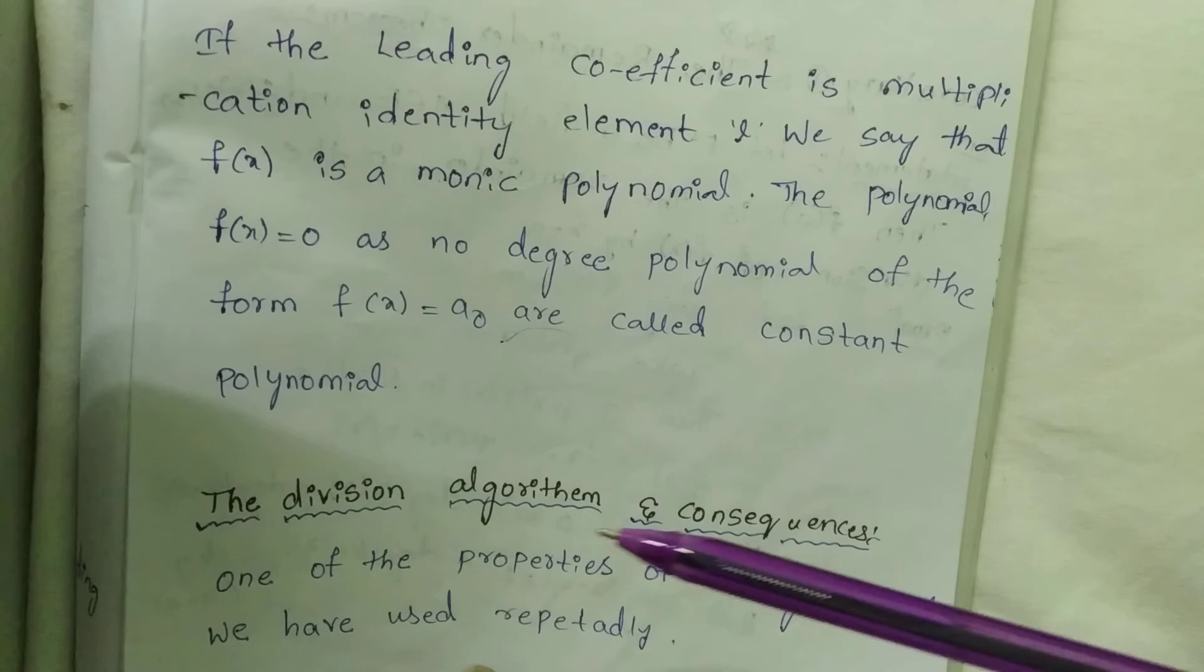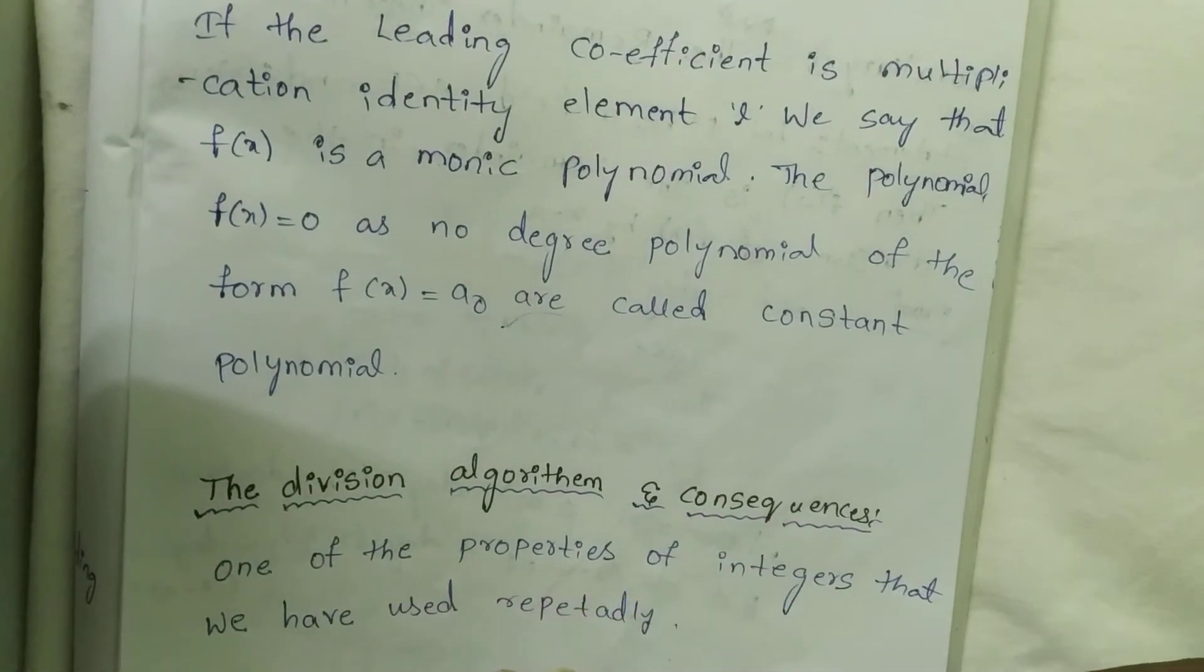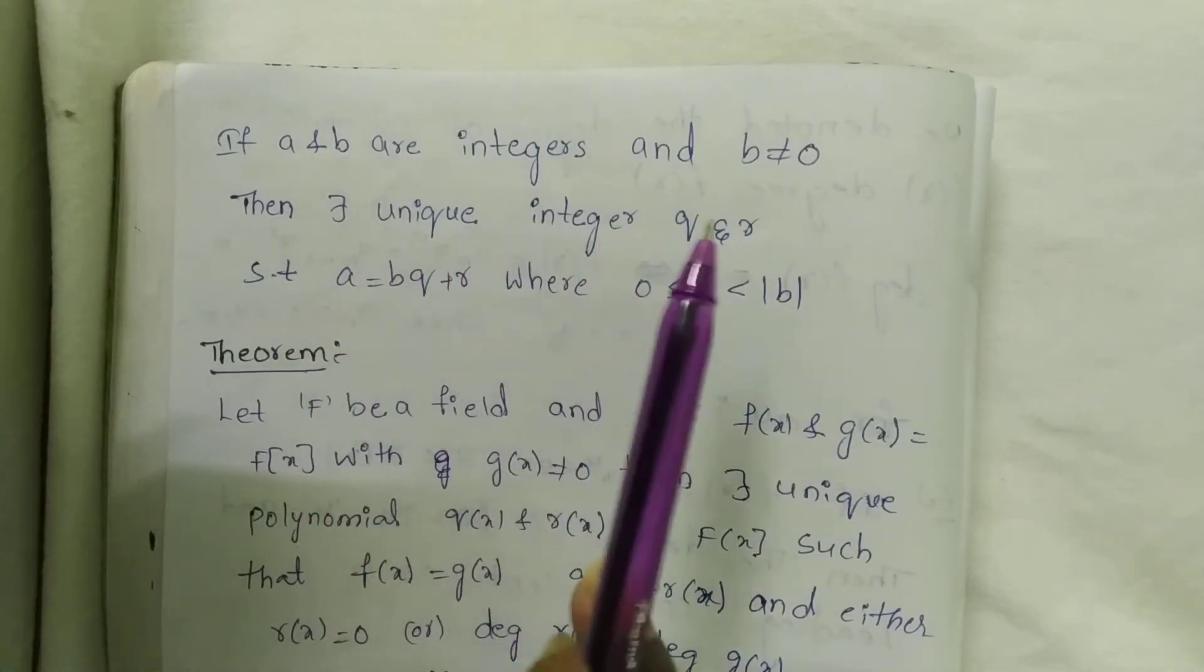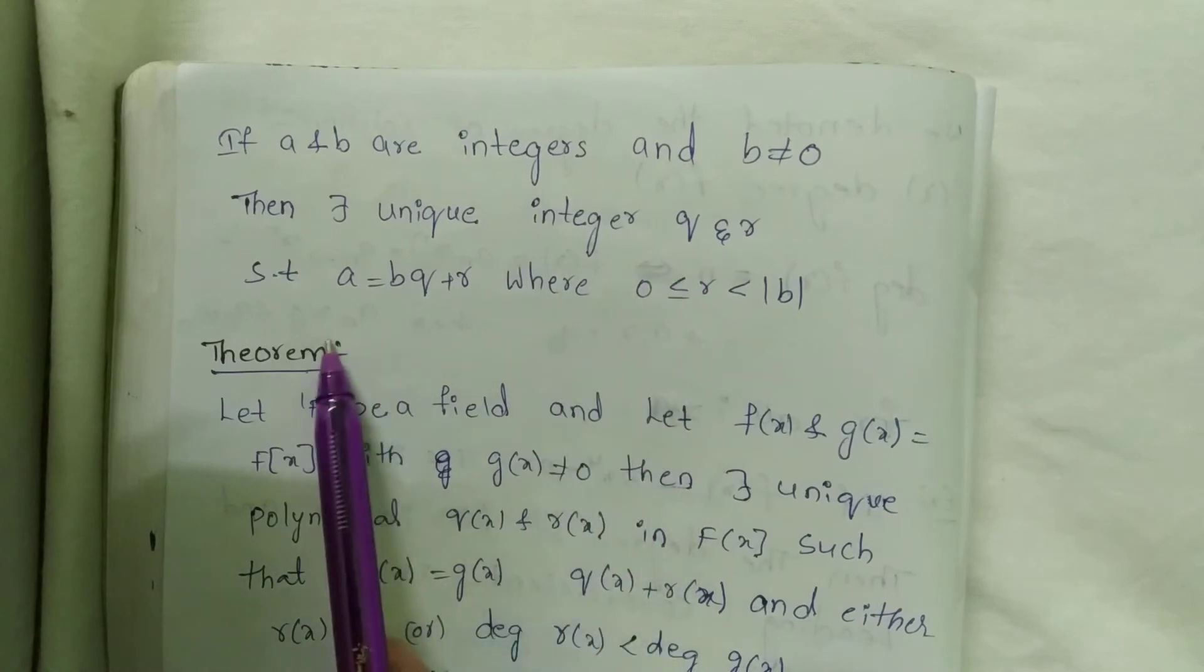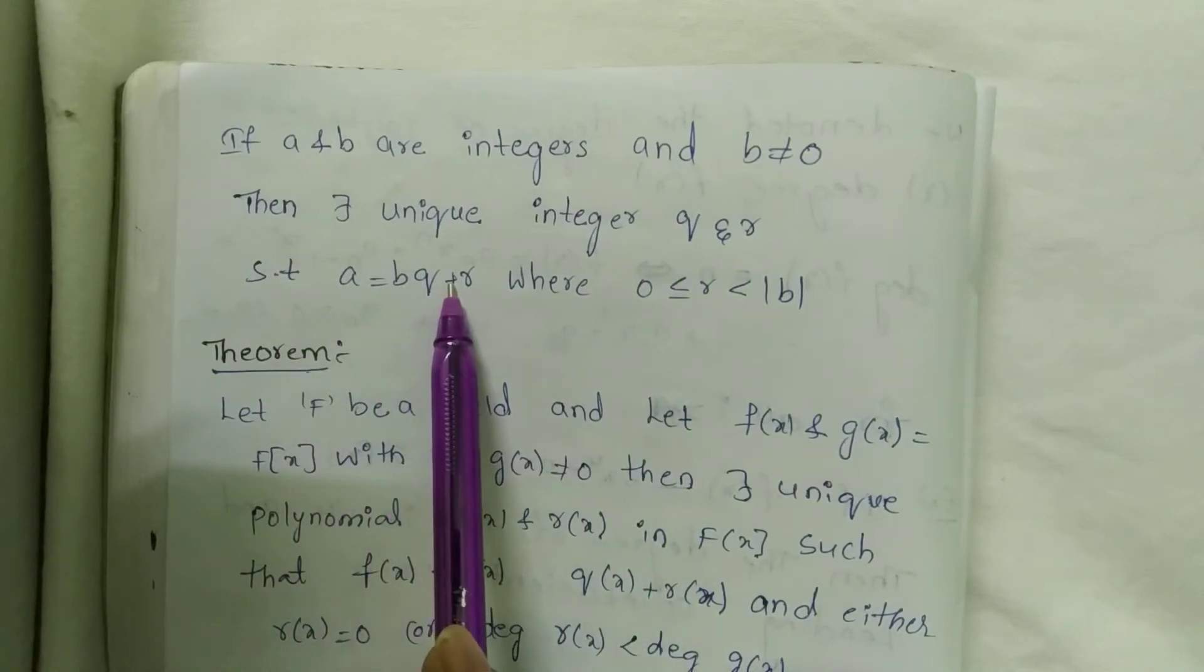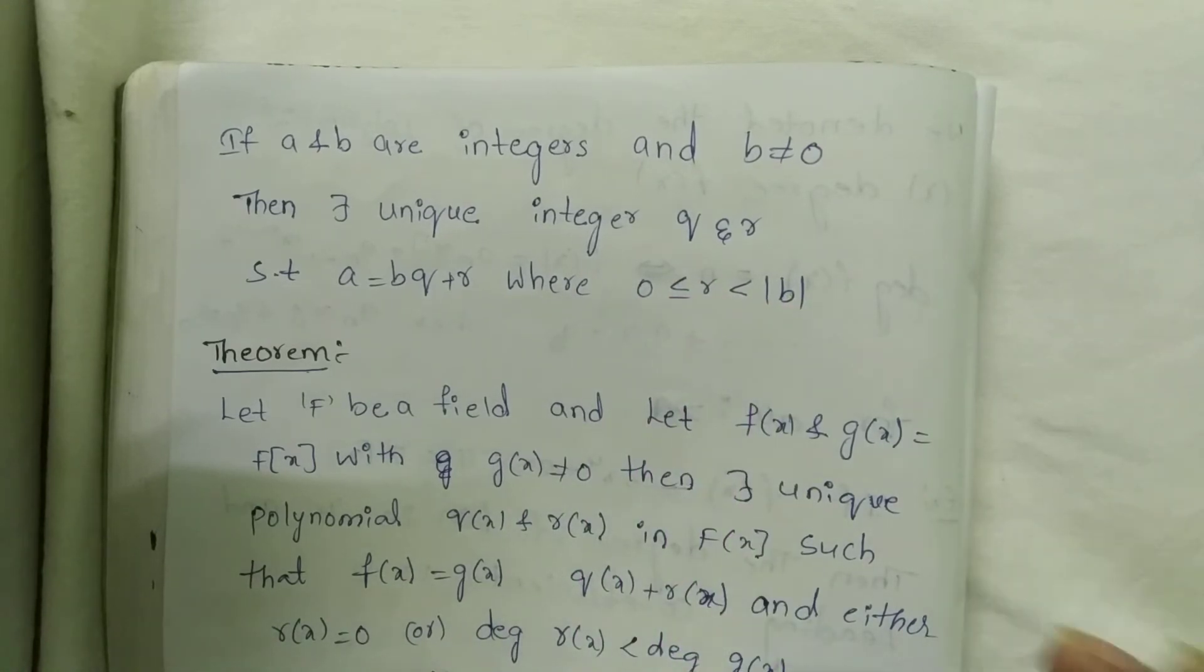The division algorithm and consequences of the properties of the integers that we have used repeatedly. If a and b are integers and b ≠ 0, then there exist integers q and r such that a = bq + r, where 0 ≤ r < |b|.